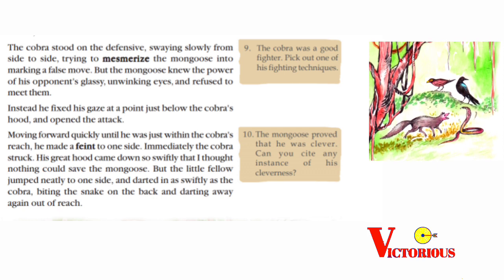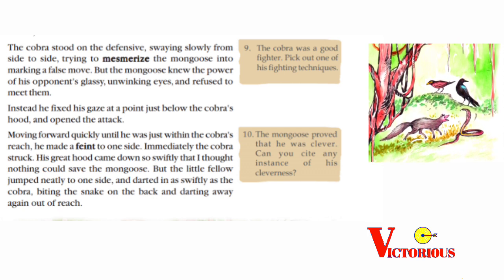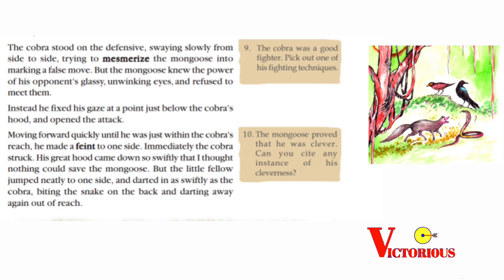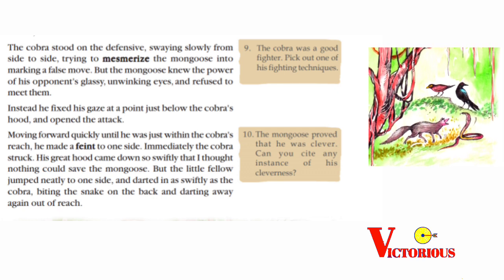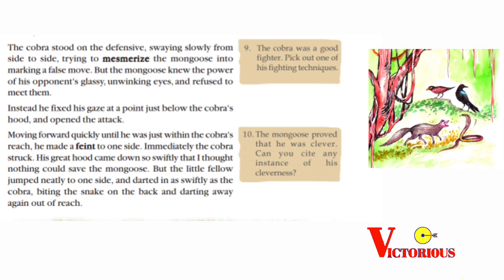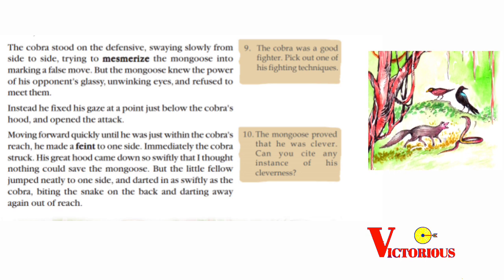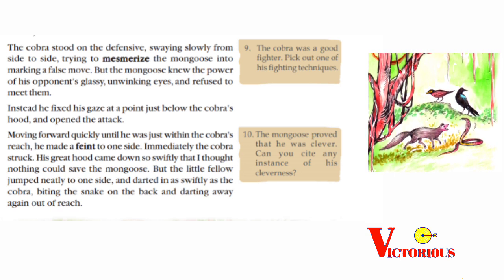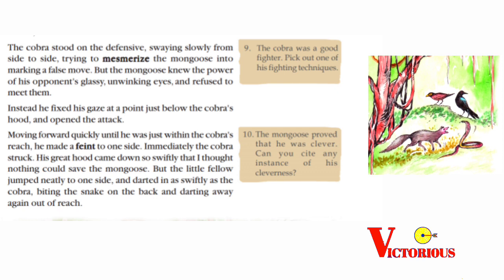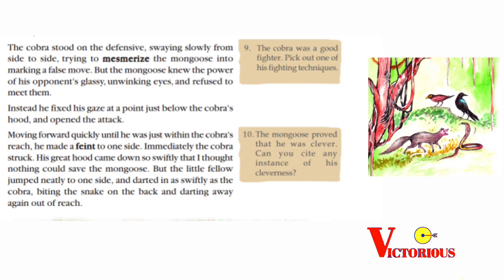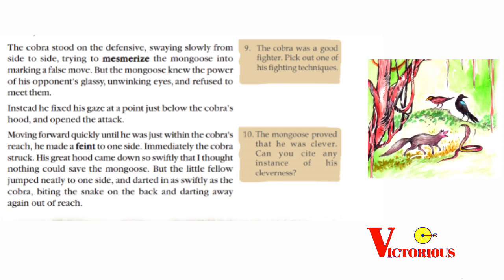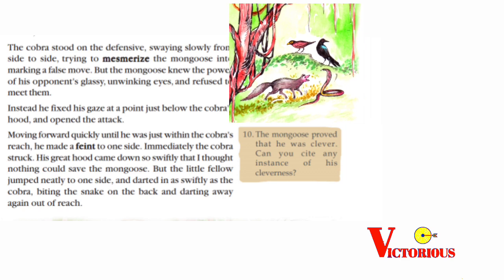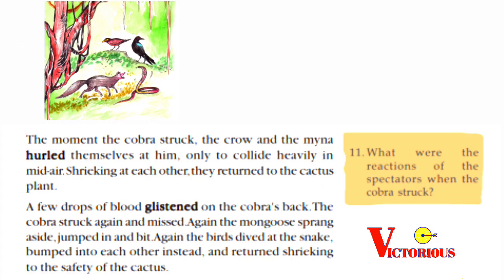There is a tenth question waiting for you: the mongoose proved that he was clever — can you cite any instance of his cleverness? The mongoose could jump to one side when the cobra tried to bite him. That is the correct answer.